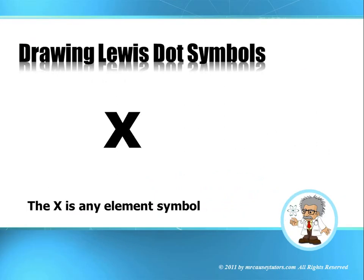So, drawing Lewis dot symbols. X is any element symbol. And I'm using that just to represent all elements. And then we put them in this order. Because of Hund's rule, we fill in the S orbital first. Then we put in the first P, the second P, and the third P. And then we go back, because of Hund's rule, we go back and fill in the second of each P. Pretty simple.